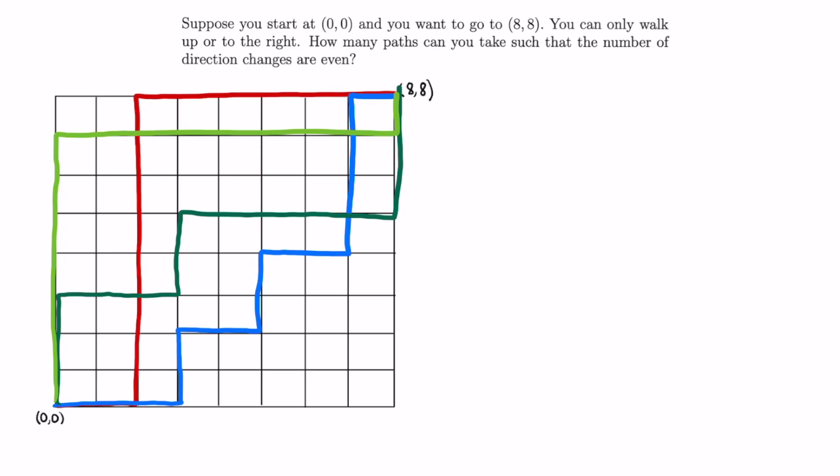Okay, so we found a necessary and sufficient condition for the number of direction changes to be even. But what do we do from there? Well, let's split up the paths into those that begin with R, and remember that means they must also end with R, and those that begin with U.